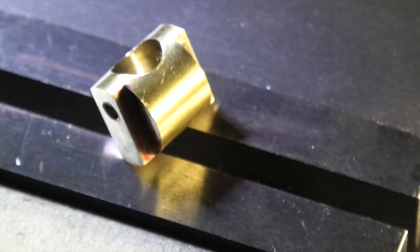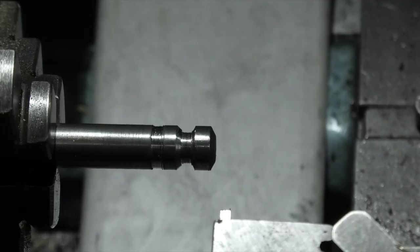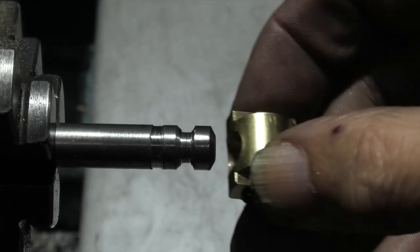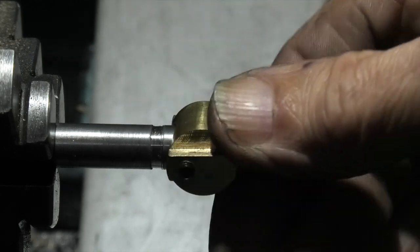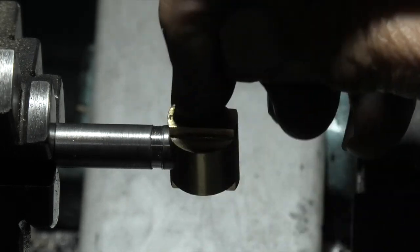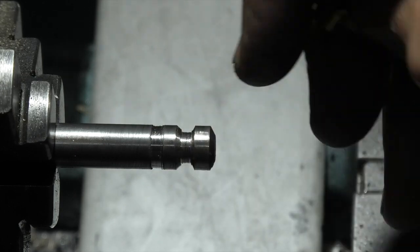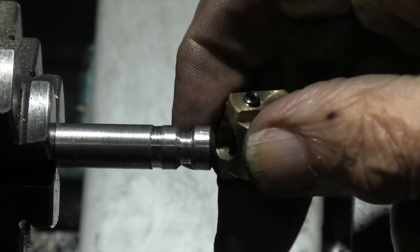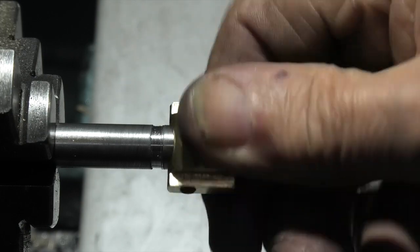Now I need to make the main screw. This form on the end is just to locate this. Two grub screws go into this groove and it stops it coming off. It still lets it twist.